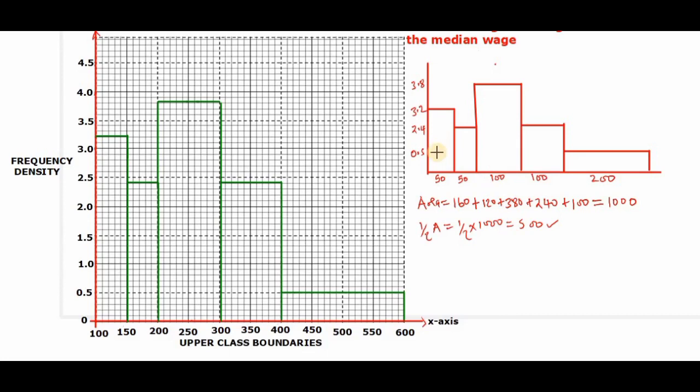For example, for the first bar, we have 160. For the second bar, we have 120. That summed up should give us 280. 280 is still less than 500.